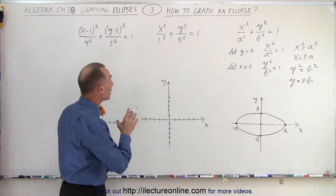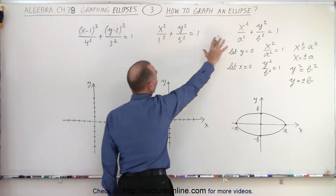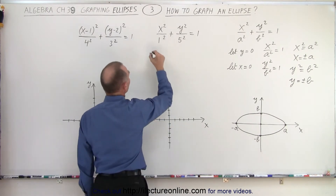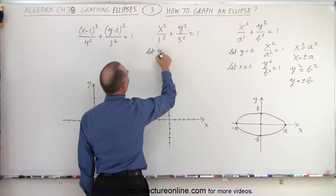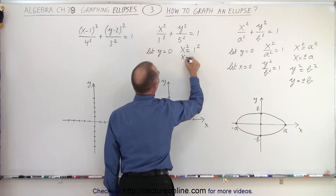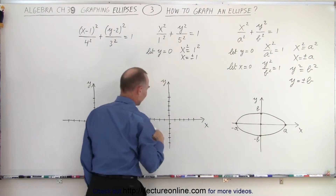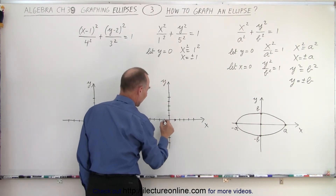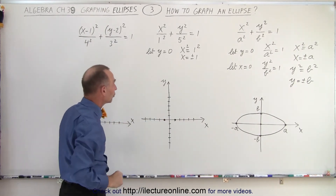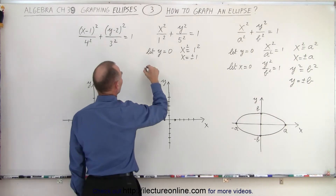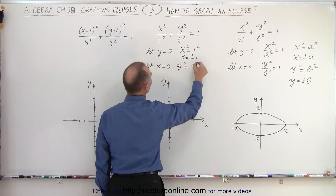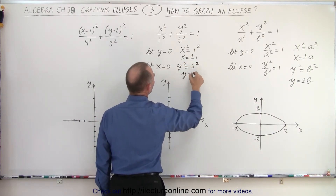Now let's do it with real numbers. It looks exactly the same as before except instead of a we have 1, and instead of b we have 5. We let y = 0, which means x² = 1², so x = ±1. We find those two locations: x = +1 is one point on the x-axis, and x = −1 is the other. That gives us the two dots on the x-axis where the ellipse will reach. Then we let x = 0, which means y² = 5², so y = ±5.